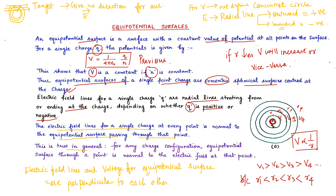How does this happen? Along the concentric surfaces, the electric field is superimposed, but the direction is given by the tangents. So this potential V and these tangents are perpendicular to each other, and they have shown the property of being perpendicular to each other.